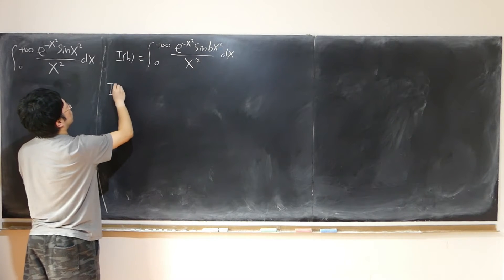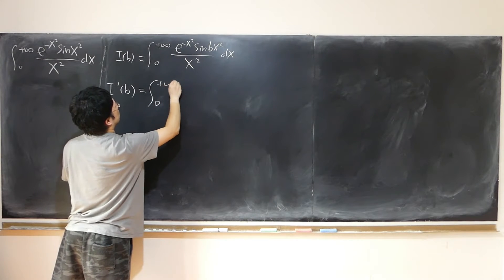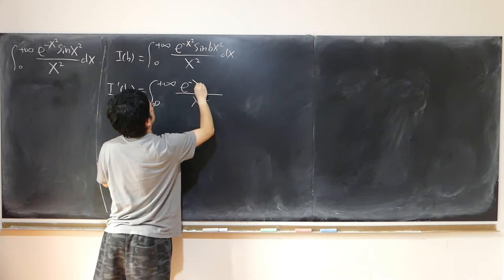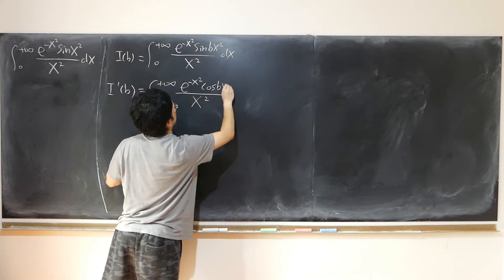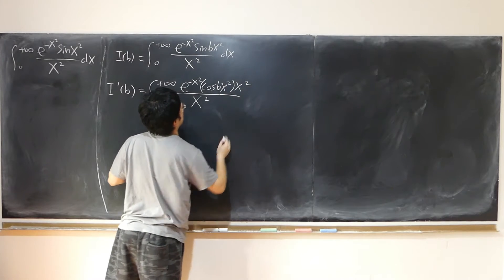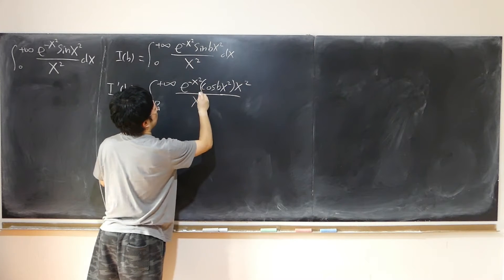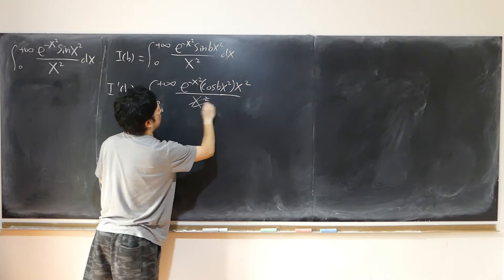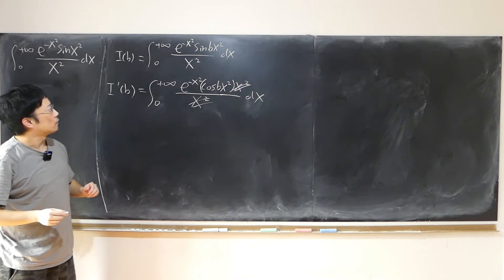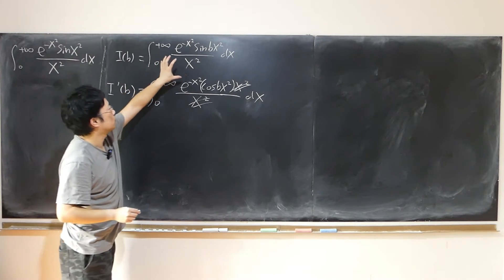Next, I want to differentiate with respect to b. So I'(b) is the integral from 0 to positive infinity of e to the negative x squared times cosine(bx²) times x squared dx. The reason is because b is the variable, x squared is a constant, and by the chain rule we get another x squared. So this time I can just easily get rid of x squared in the denominator.